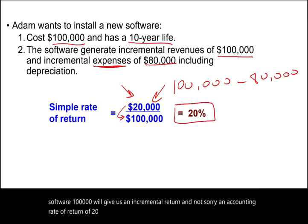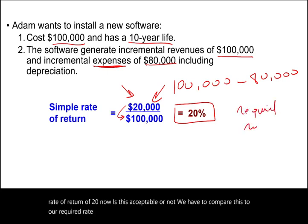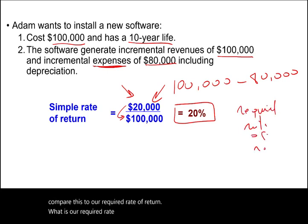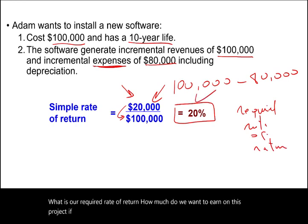Is this project acceptable? We have to compare the ARR to our required rate of return — how much we want to earn on this project. If the required rate of return is less than 20%, the project is acceptable when judged by ARR. If it exceeds 20%, the project is not acceptable.